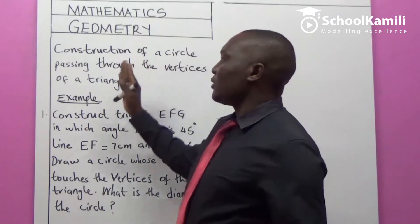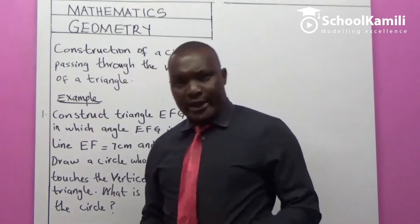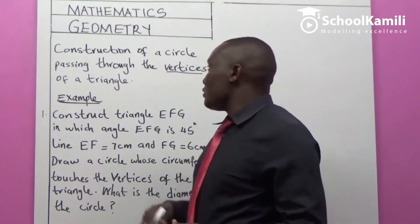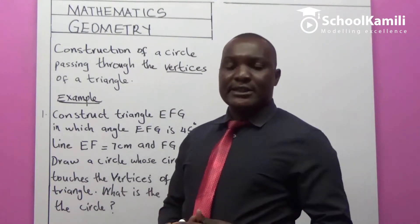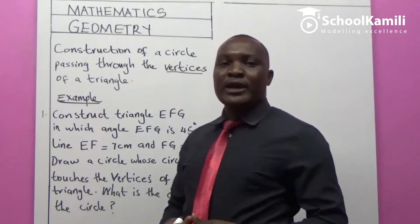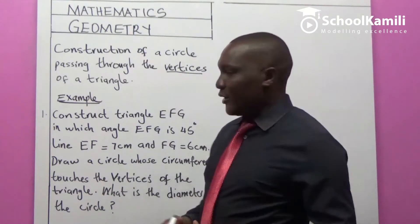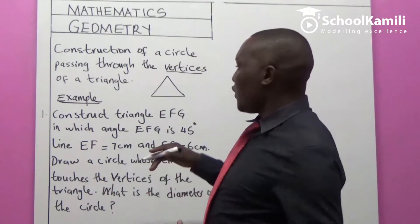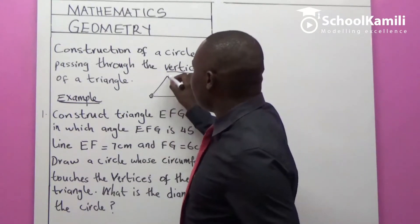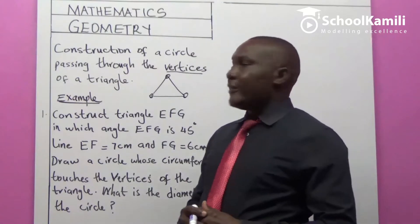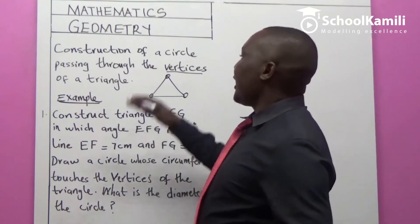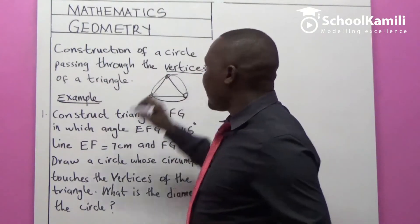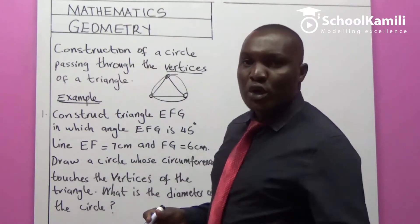Construction of a circle passing through the vertices of a triangle. You may be wondering what vertices are, but I'm sure the majority of you know. Vertices are the corners or the points of a triangle. For example, if this is the triangle, the vertices are the corner joints — those are the ones we refer to as vertices. So we want to construct a circle that is going to pass through these vertices. That's what we want to construct today.